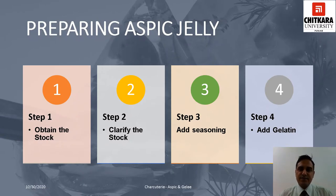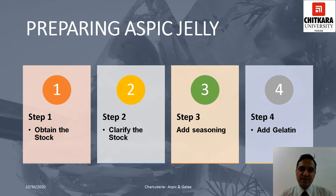In this slide, we are going to learn about the preparation of aspic jelly. The preparation of aspic jelly can be broken down into four steps: first, obtain or prepare the stock; second, clarify the stock; third, add seasoning; and fourth, add gelatin. To prepare stock, one has to start with fresh ingredients like vegetables and bones and follow the principles of making a quality stock.